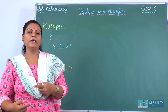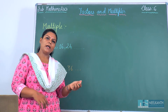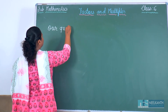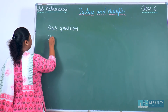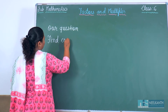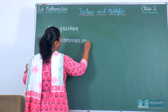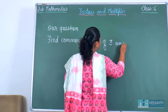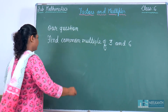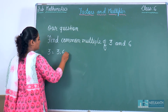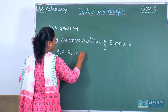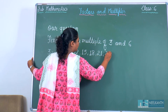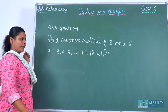Now they have asked us to find the common multiples between two given numbers. Our question is: find the common multiples of 3 and 6. First of all, we have to write the multiples of 3: 3, 6, 9, 12, 15, 18, 21, 24. These are the multiples of 3.